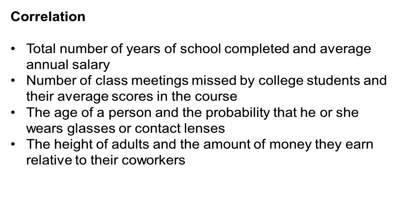Here are some examples where two variables can be paired so that you can check their correlation. Total number of years of school completed and average annual salary. Number of class meetings missed by college students and their average scores in the course.